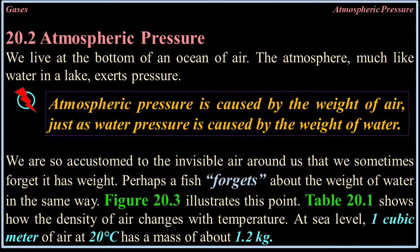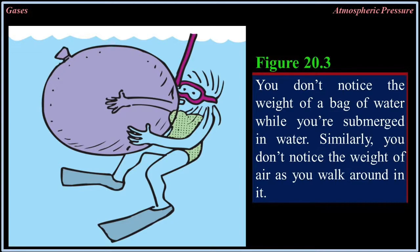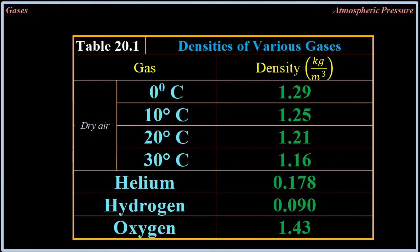20.2 Atmospheric Pressure. We live at the bottom of an ocean of air. The atmosphere, much like water in a lake, exerts pressure. Atmospheric pressure is caused by the weight of air, just as water pressure is caused by the weight of water. We are so accustomed to the invisible air around us that we sometimes forget it has weight — perhaps a fish forgets about the weight of water in the same way. At sea level, one cubic meter of air at 20 degrees Celsius has a mass of about 1.2 kilograms.